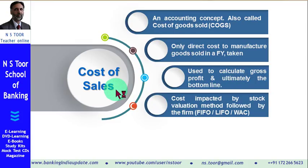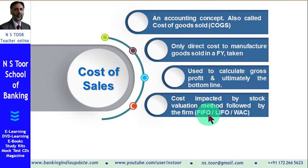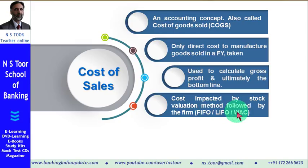When we calculate cost of sales, this cost is impacted by the stock valuation method. A firm's stock valuation is done on the basis of certain methods. These methods can be the FIFO method (First In First Out), the LIFO method (Last In First Out), or the WAC (Weighted Average Cost) method. Depending upon which method is used, the cost considered while calculating cost of sales can be impacted, affected, or changed.